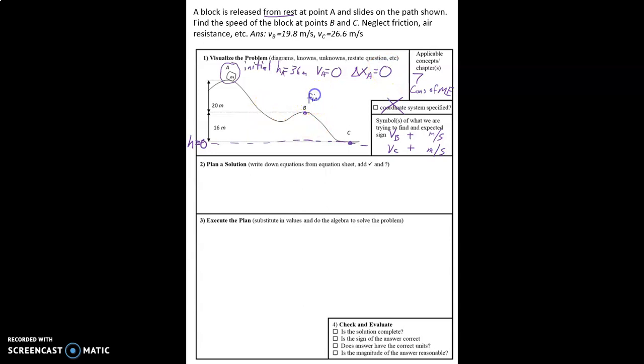Final is going to be right here. And so H sub B is going to be 16 meters. V sub B, I don't know, and delta x B is equal to zero.